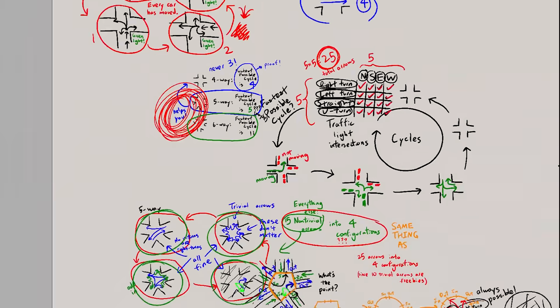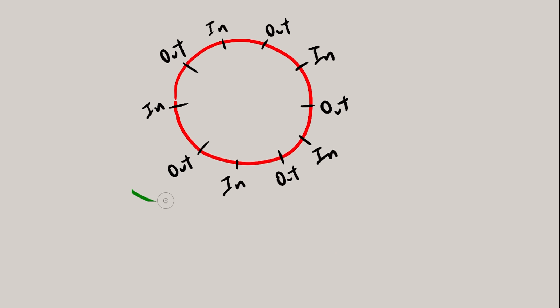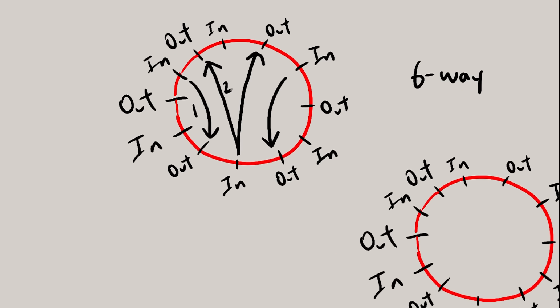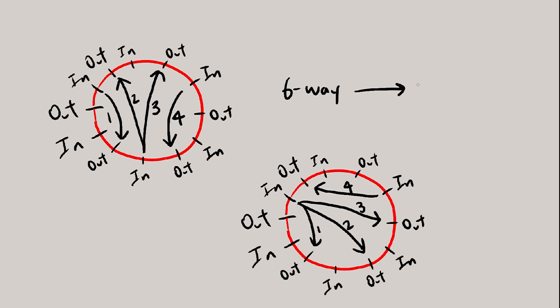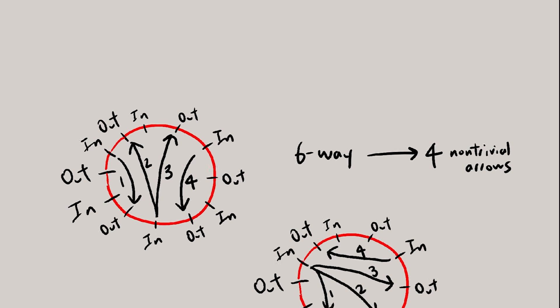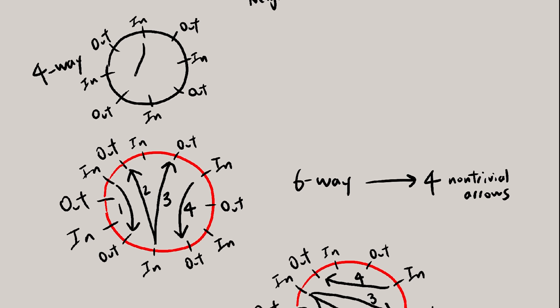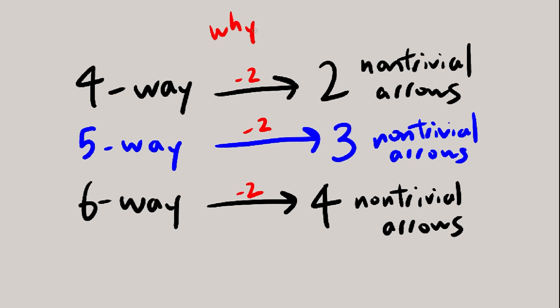So on to 6-way intersections. The good thing is we don't need to draw a bunch of stuff again, we just add a couple extra points to our circular diagram, which is nice. If you do some more waffling around, the maximum number of non-trivial arrows seems to be 4 here, you won't be able to get 5. And for 4-way intersections, the maximum is 2 non-trivial arrows. Okay, well we see the pattern. You subtract 2, but why is that?